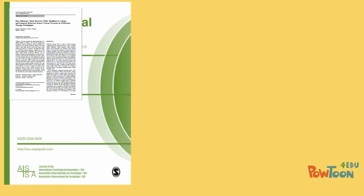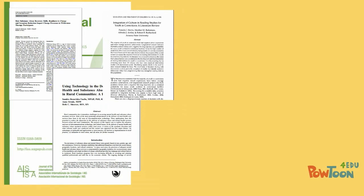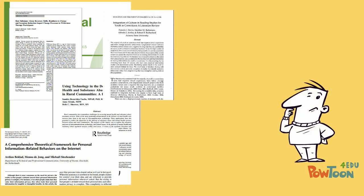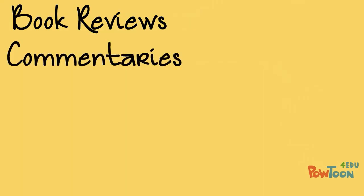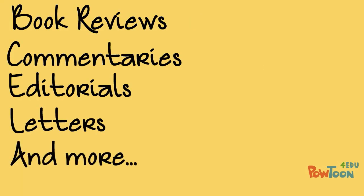Scholarly journals publish many different types of articles, some research and some not. Other types of non-research articles Jacob would sometimes come across include book reviews, commentaries, or letters to the editor.